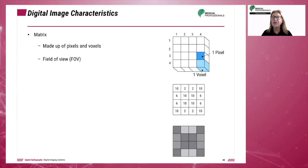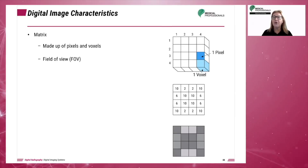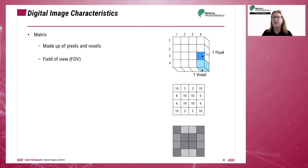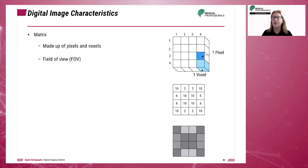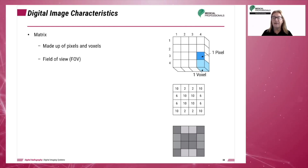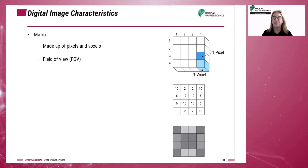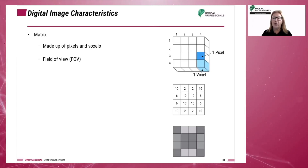All digital images, regardless of which technology is used, are composed of a matrix or a combination of rows and columns of small squares called picture elements or pixels. Each pixel is recorded as a single numerical value which is represented as a single brightness level on the monitor. The location of the pixel within the matrix corresponds to an area within the patient or a volume of tissue.